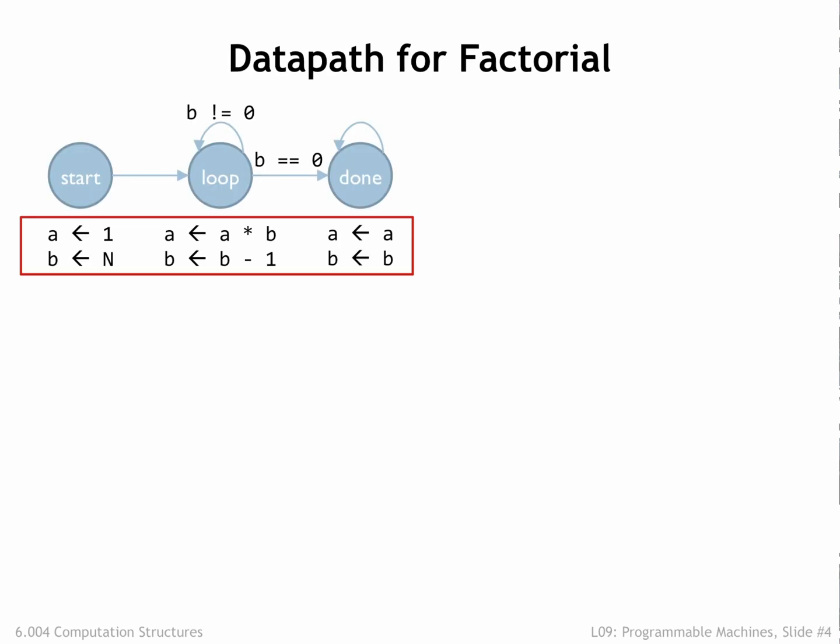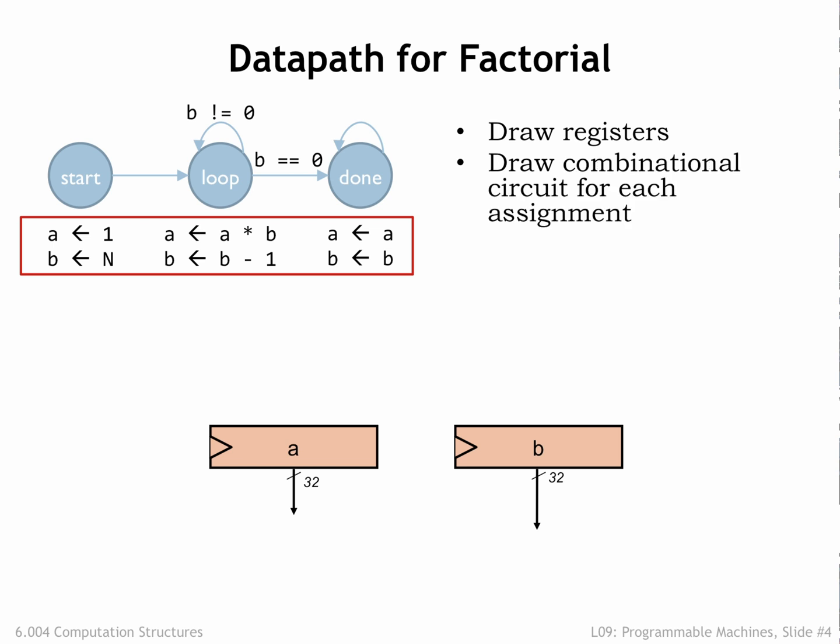Let's start by designing the logic that implements the desired computations. We call this part of the logic the data path. First we'll need two 32-bit D registers to hold the a and b values. Then we'll draw the combinational logic blocks needed to compute the values to be stored in those registers. In the start state, we need the constant 1 to load into the a register and the constant n to load into the b register.